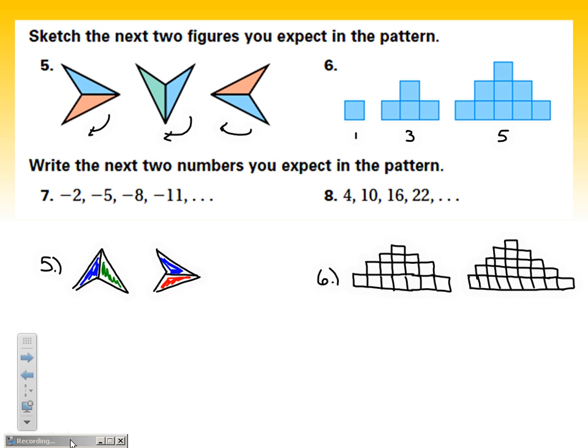Alright, for number seven and eight, these I can actually fit up here. What's our pattern in number seven? Well, it looks like we are subtracting three each time. I go from negative two to a number that is more negative. That means I had to take away more. I had to take away three more. And yeah, that pattern continues. I keep subtracting three. So, the next number in line should be when I take away three from negative eleven - negative fourteen. And then when I take away three from that, negative seventeen.